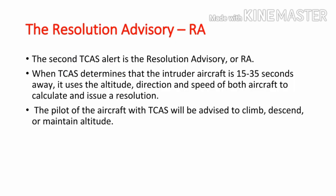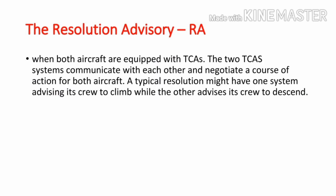The second TCAS alert is the resolution advisory, or RA. When TCAS determines that the intruder aircraft is 15 to 35 seconds away, it uses the altitude, direction, and speed of both aircraft to calculate and issue a resolution. The pilot will be advised to climb, descend, or maintain altitude. When both aircraft are equipped with TCAS, the two systems communicate with each other and negotiate a course of action for both aircraft. A typical resolution might have one system advising its crew to climb while the other advises its crew to descend.